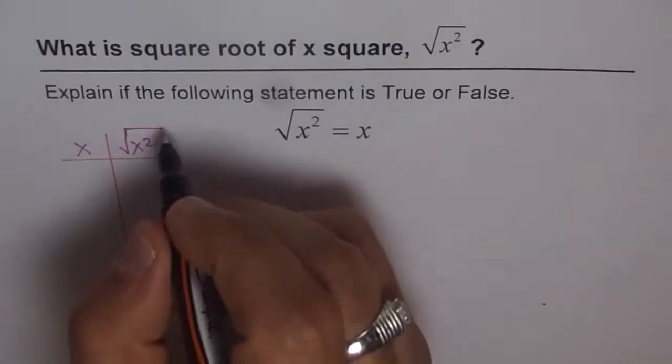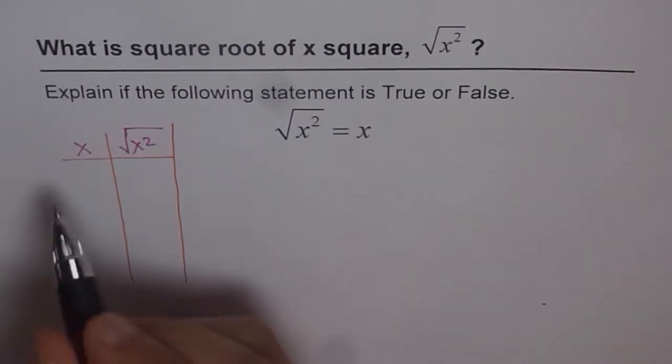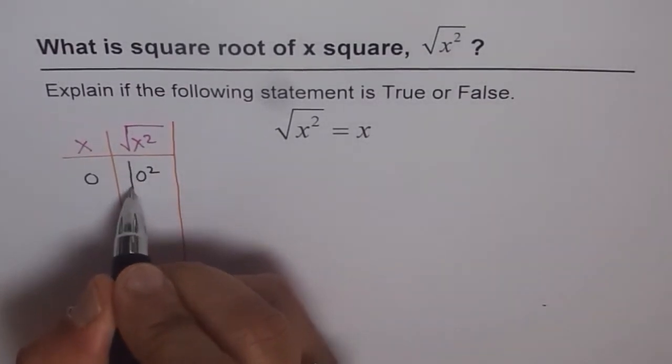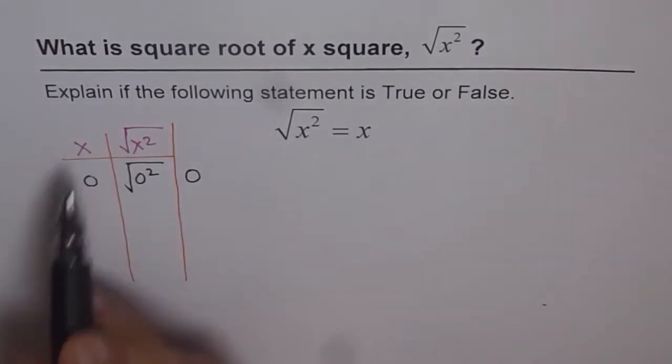I'll tell you why. So what we will do here is, let's say we put x as 0. So what is 0 square square root? Of course, it is 0. It is same as x, correct?